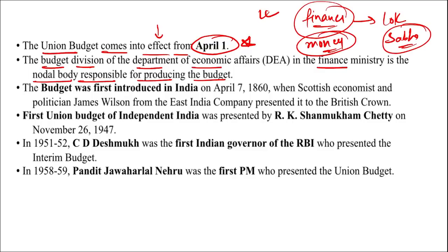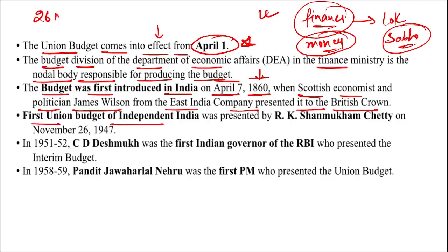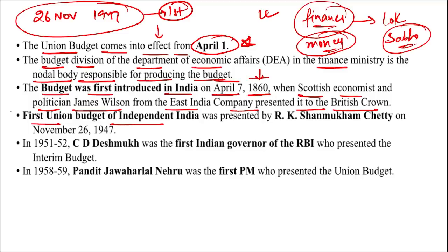The budget was first introduced in India on 7th April 1860, during the British era, when Scottish economist and politician James Wilson from the East India Company presented it to the British Crown. The first Union Budget of independent India was presented on 26th November 1947 by R.K. Shanmukham Chetty. Remember: first budget in India's history — 1860; first budget of independent India — 26th November 1947.